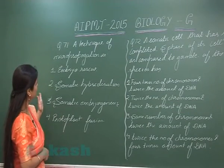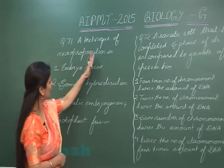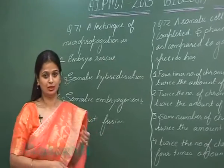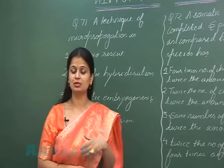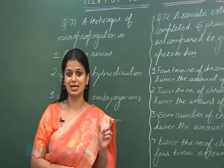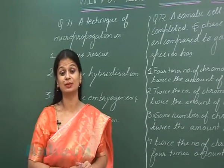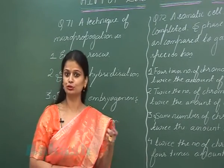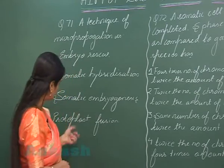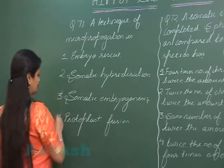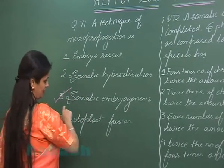Question number 71: a technique of micropropagation. Micropropagation involves formation of small size plants, that is plantlets, through tissue culture. This can be done through somatic embryogenesis.